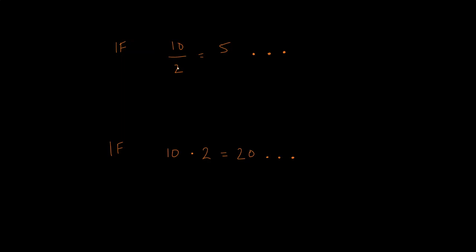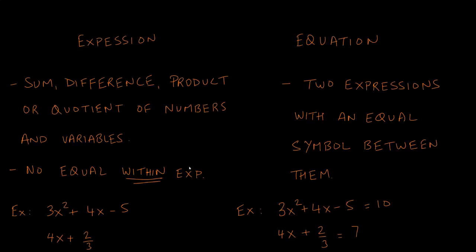The same applies for division and multiplication. If we divide ten by two to get five, we multiply five by two to go back to ten. And if ten multiplied by two gives twenty, we divide twenty by two to undo the multiplication and return to ten.